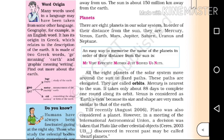All eight planets of the solar system move around the sun in fixed paths. These paths are elongated and are called orbits.